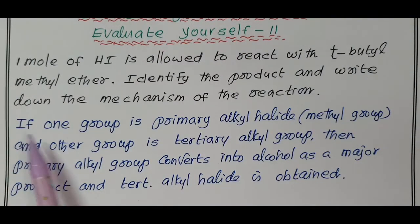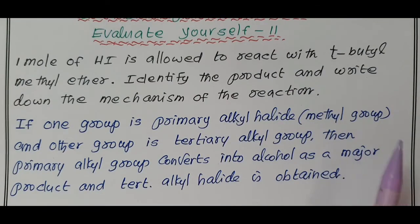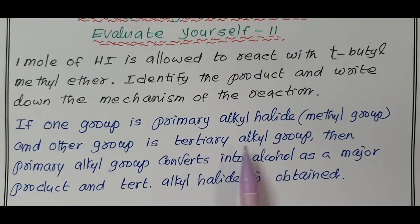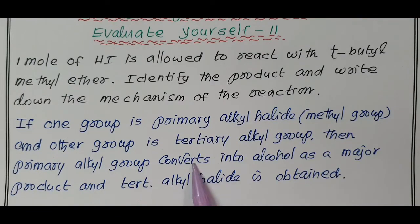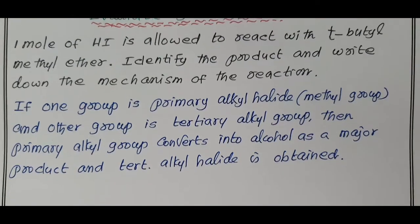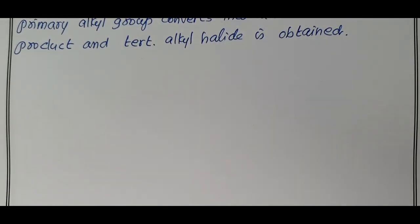Now, if one group is primary alkyl halide, that is methyl group, and other group is tertiary alkyl group, then primary alkyl group converts into alcohol as a major product and tertiary alkyl halide is obtained. Now we write the equation first, then we discuss the mechanism.